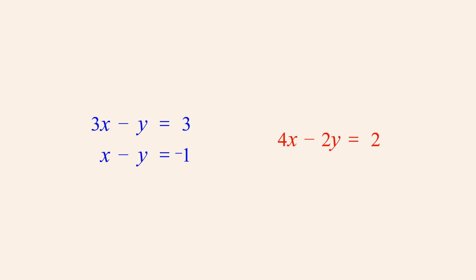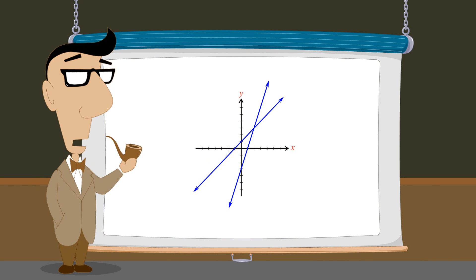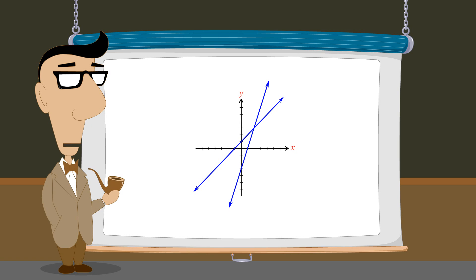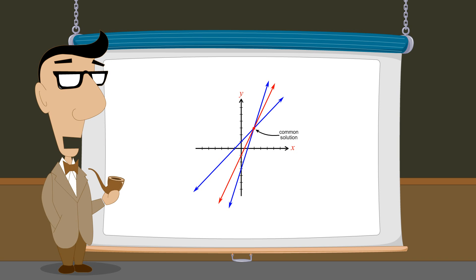If we graph all three equations, we see that the graph of the new equation has only one point in common with the two equations which were added. All three equations intersect at this same point. When adding two equations, the solutions of the equation which is produced are generally different from the solutions of either equation in the system, and so its graph will be different as well. However, the new equation will always share the one solution which is common to both equations of the system.